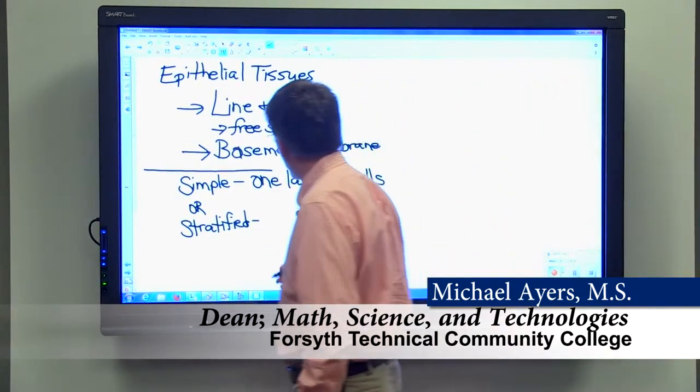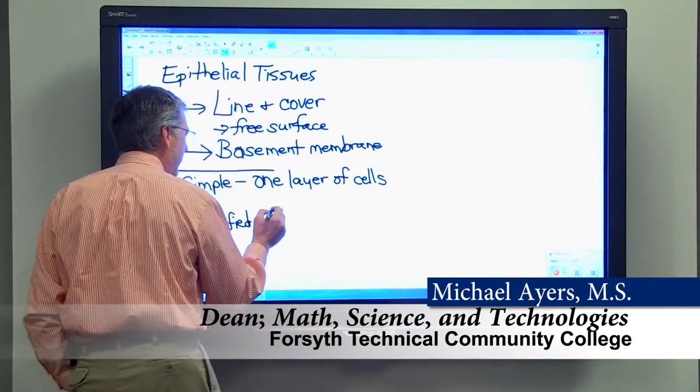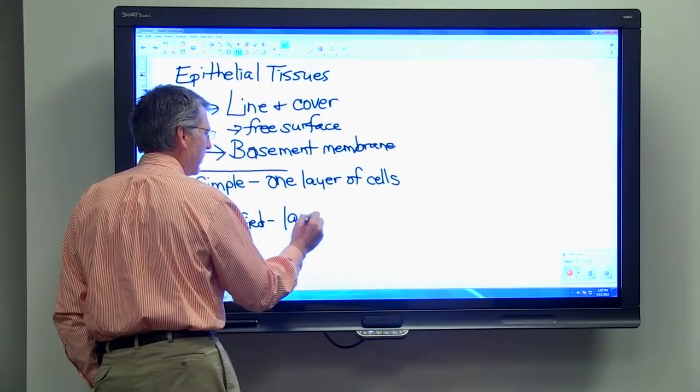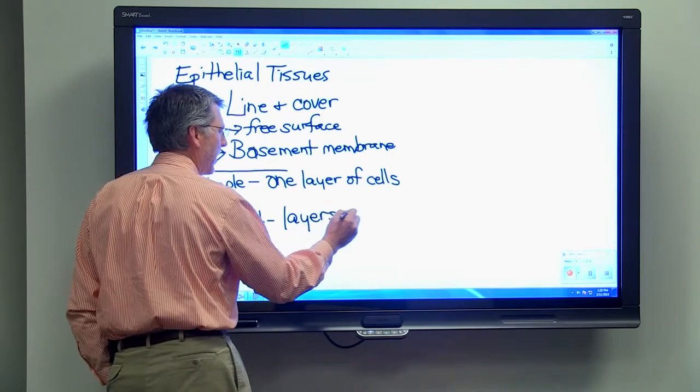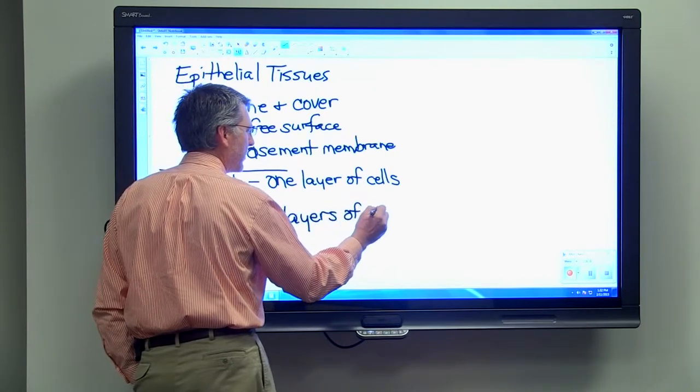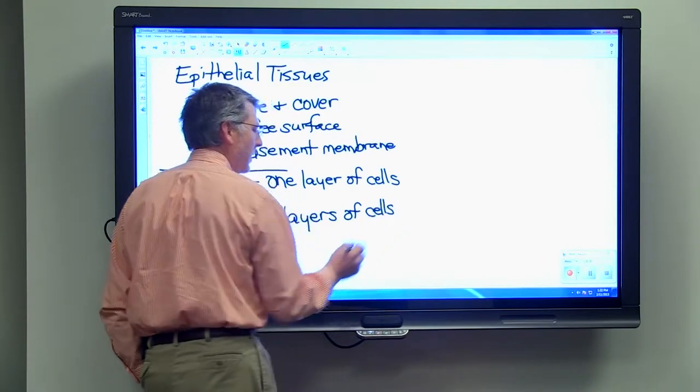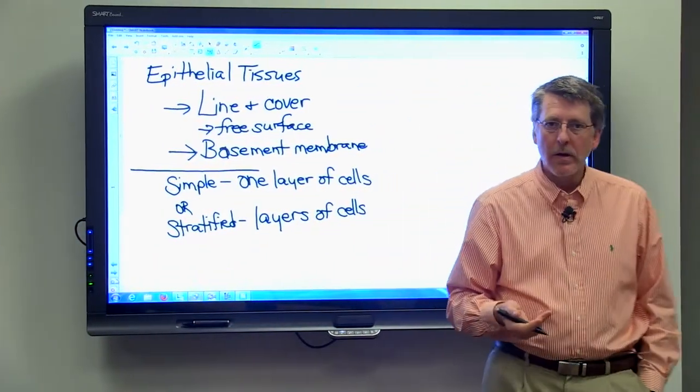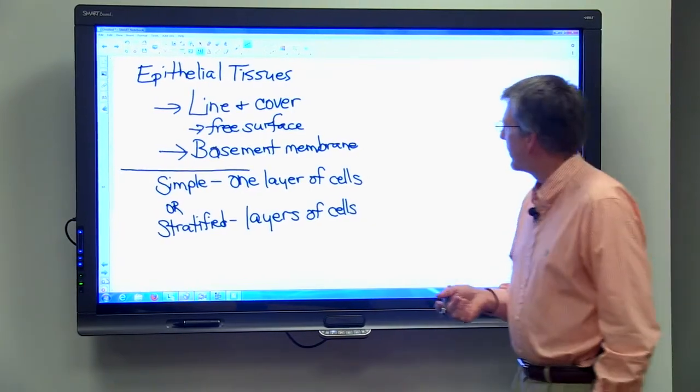A stratified tissue, on the other hand, has more than one layer of cells. So epithelial tissues may be simple or they may be stratified.